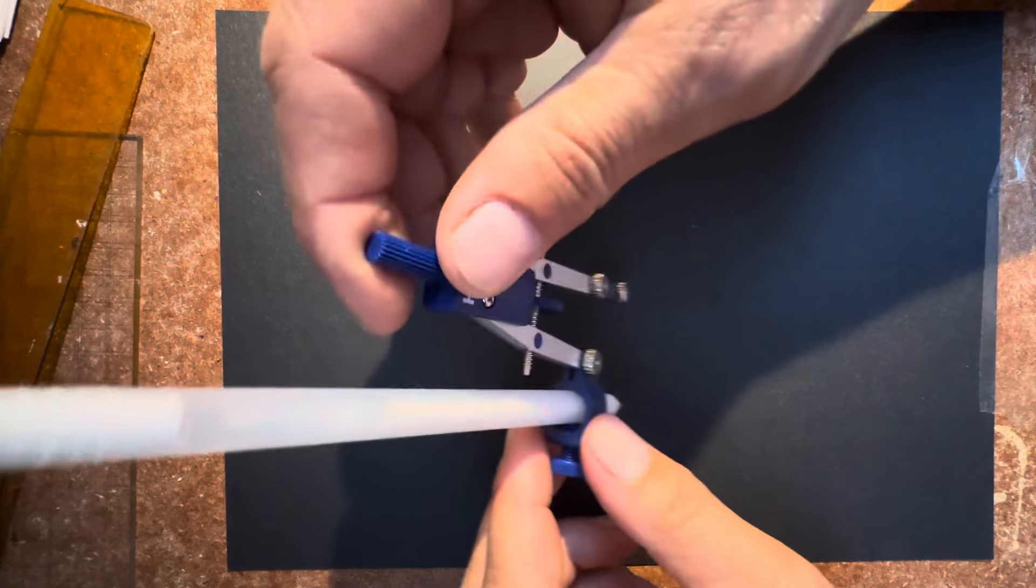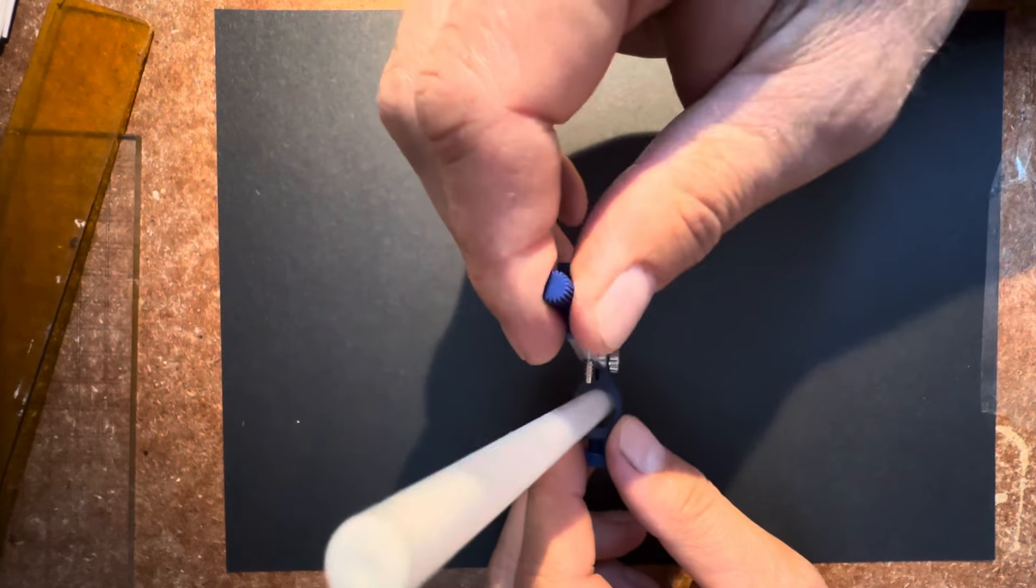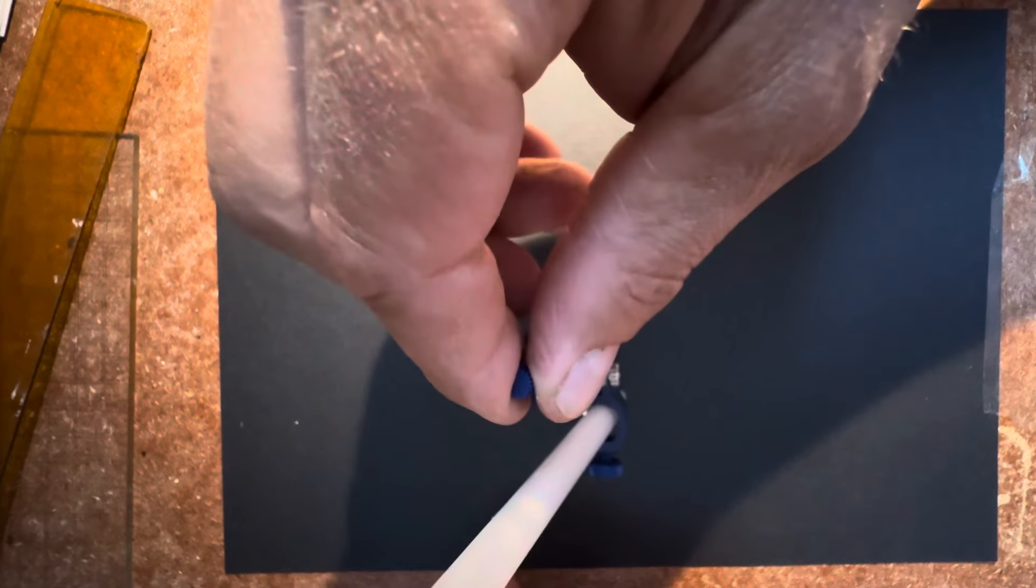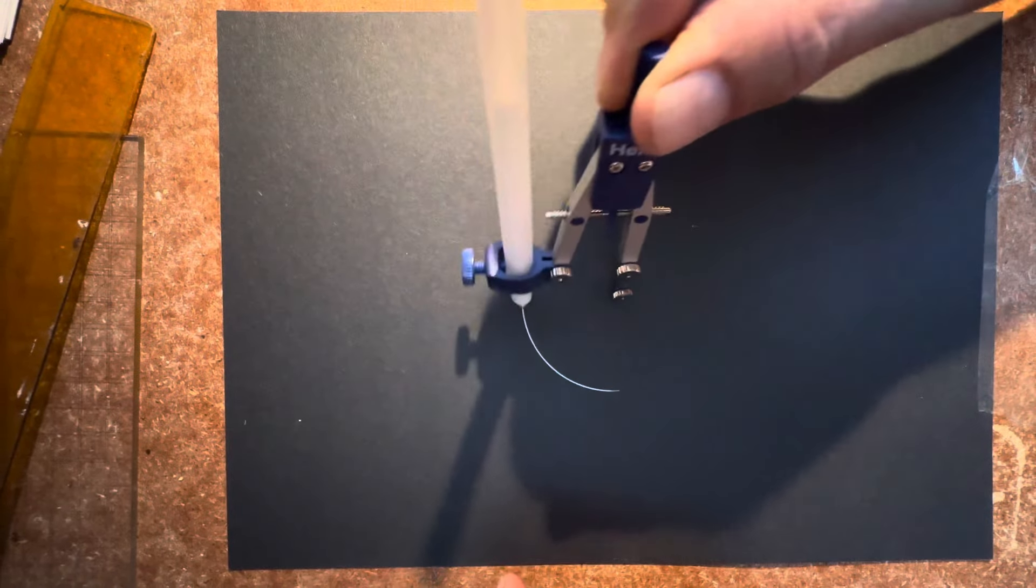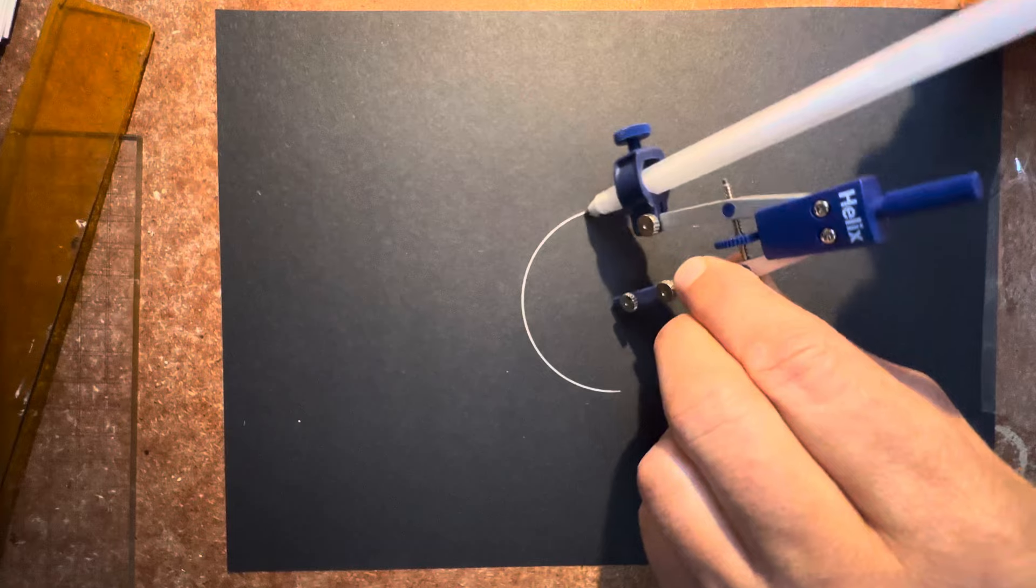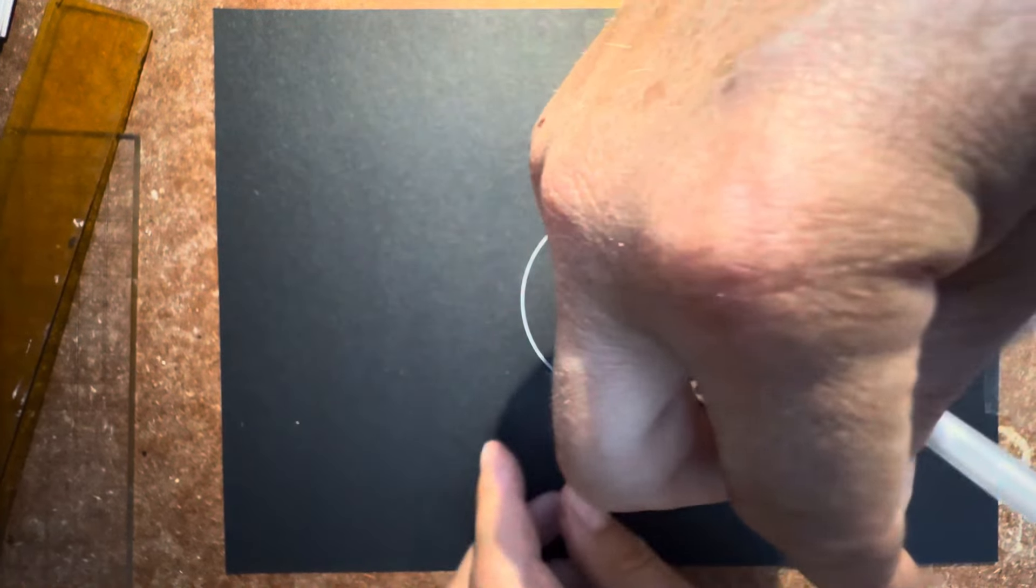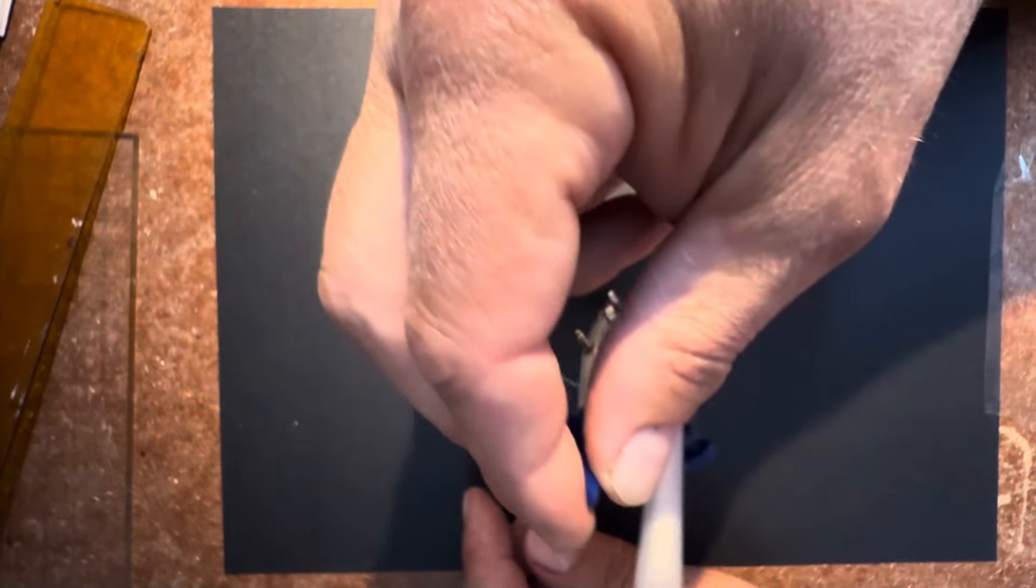Drawing the seed of life with a pair of compasses. To do this you need to draw a central circle. I'm using a gel pen and a pair of compasses.